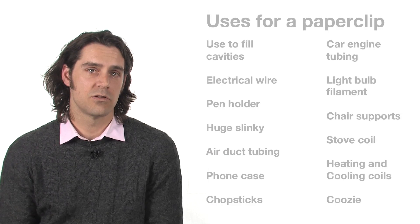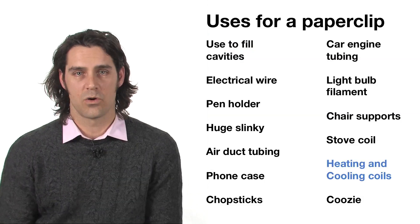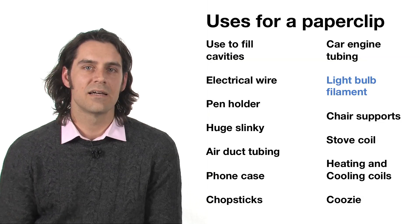If you relax the assumption that the paperclip is made of metal, there are another range of ideas that you could use. For example, you could use it to fill your cavities. You could use it as a heating or cooling coil. You could also use it as lightbulb filament or finally as chopsticks.